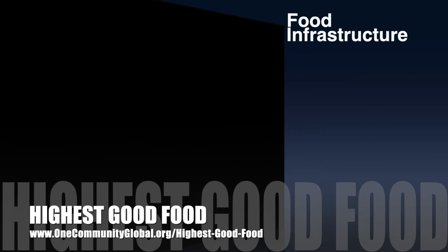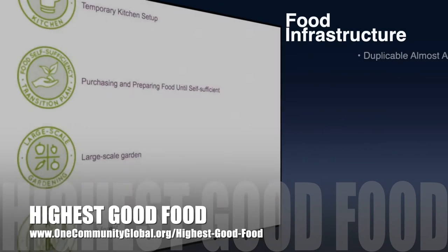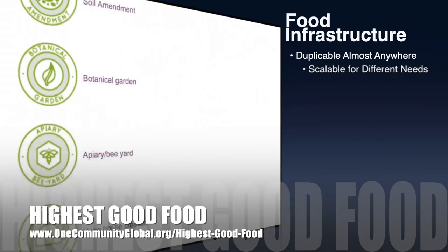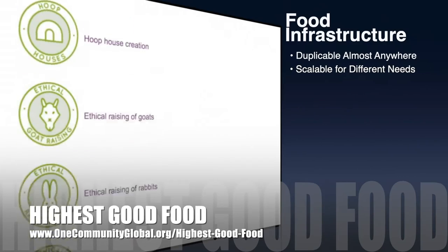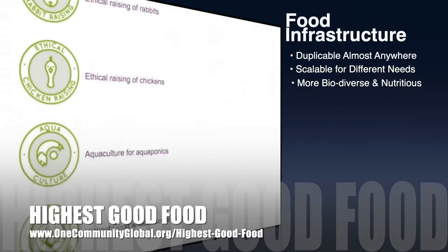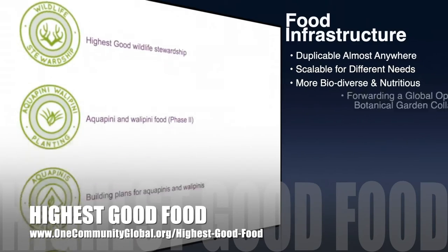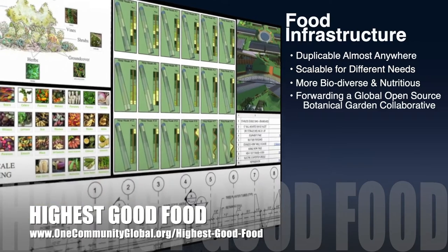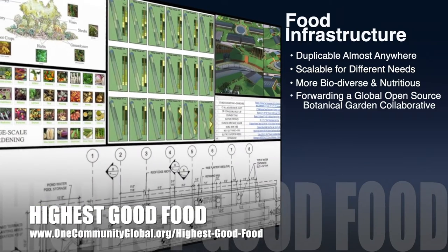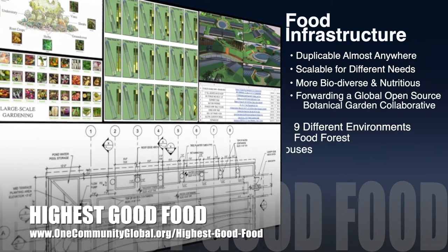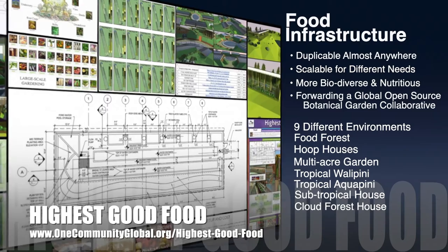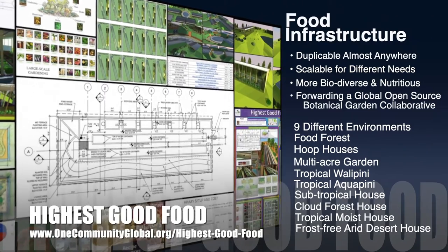One Community's approach to highest good food is duplicable almost anywhere, scalable for different needs, more biodiverse and nutritious, part of forwarding a global open source botanical garden collaborative, and includes nine different free shared and duplicable growing environments.